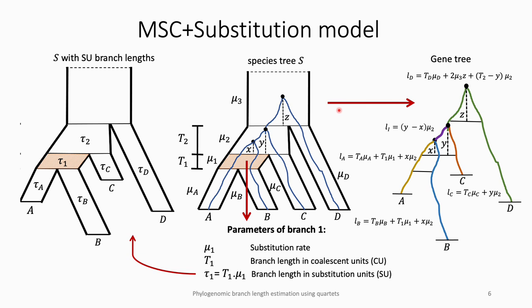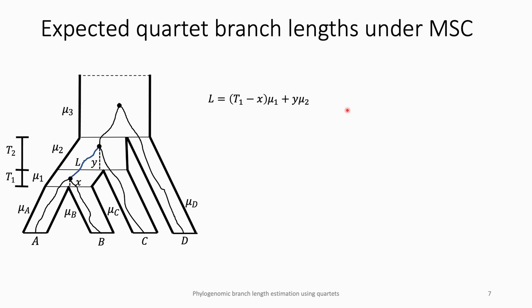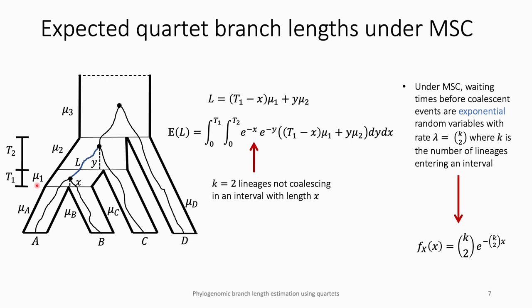Gene tree branch lengths are a function of the species tree parameters under this model, so going backwards, we can estimate species tree branch lengths using gene tree branch lengths. To do this, we first compute the expected value of each gene tree branch. For example, to compute the expected length of the internal branch in a gene tree matching the species tree topology, the length is the sum of two parts: (t1 minus x)·mu1 plus y·mu2. Since x and y are variables, we integrate over those intervals using the probability density function derived from the MSC model. For instance, the probability of two lineages not coalescing in an interval of length x is e to the minus x.